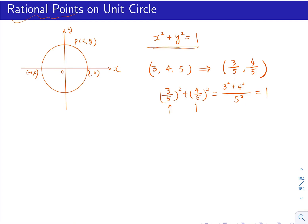Any Pythagorean triple gives you a rational point on the unit circle. If a, b, c is a triple, then the point (a/c, b/c) lies on the unit circle. So there is a direct connection between Pythagorean triples and rational points on the unit circle.